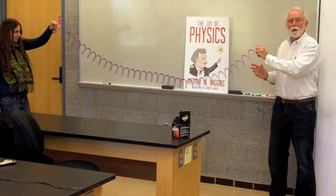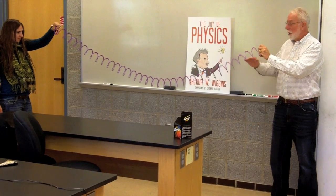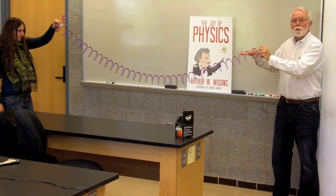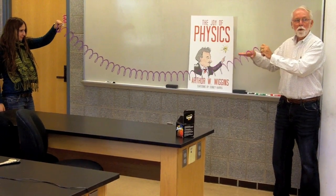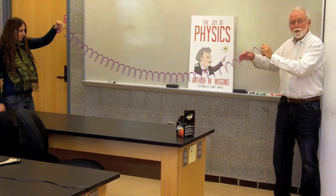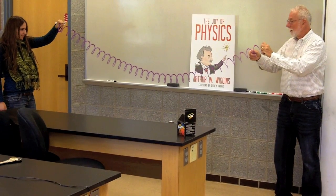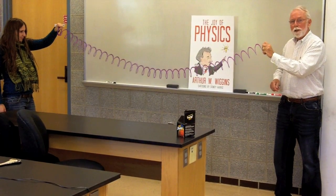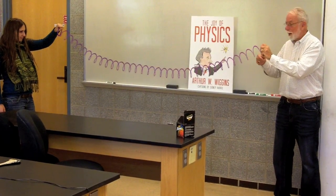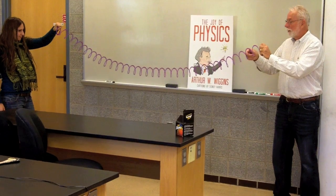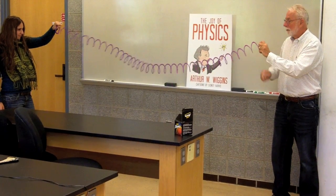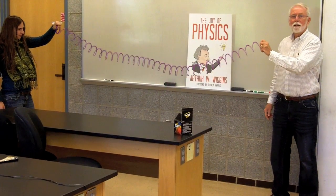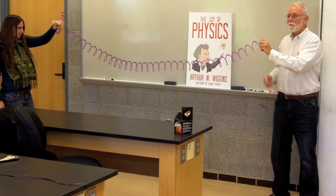The other kind is called longitudinal. In that one, the spring moves back and forth along the axis of the spring. Longitudinal. You see how that goes all the way to the other end, then reflects back. Longitudinal.